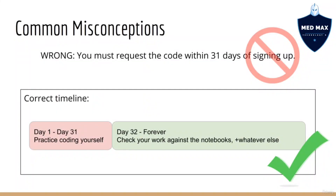There are a few more common mistakes and misconceptions to discuss. Firstly, some students get the timeline completely backwards. They believe that they must request the code within the first 31 days of signing up, otherwise they will lose access to the code forever. This is not correct, and it doesn't make any sense at all. The correct timeline is this: for the first 31 days you are taking this course, you should be coding by yourself.